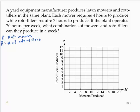Now, we know that each mower requires four hours to produce, and rototillers require seven hours to produce. And we have a total of 70 hours per week that we can use. So if we produce m mowers, that's 4m amount of time. So we would have four times the number of mowers - that's the number of hours.